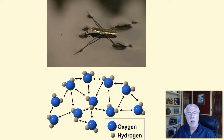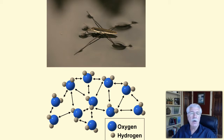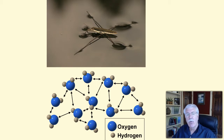The water molecules at the surface are more strongly attracted to other water molecules on the surface than those below the surface, because there are no water molecules directly above the water molecules on top of the surface. This forms a strong surface film. It takes more force for an object to break through the surface film than to move through the water below it.